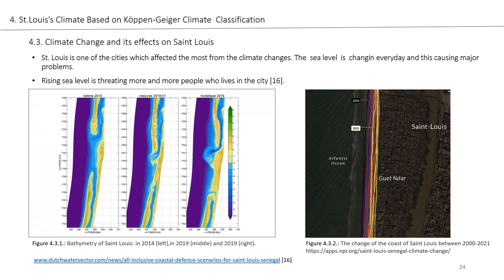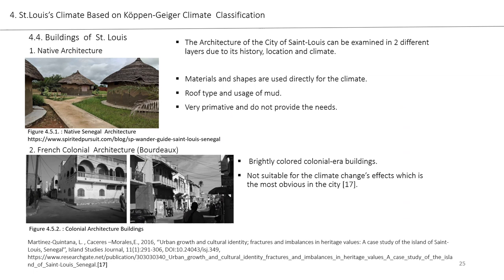The architectural types that affect St. Louis architecture can be examined in different layers due to its history, location, and climate. The first is native architecture, where materials and shapes are used directly for the climate of that time, with characteristic roof types, though it is very primitive and does not provide all necessary needs. The second is French colonial architecture from Bordeaux. All of these brightly colored colonial buildings are not suitable for climate change and its effects in Senegal, and the damage to these buildings makes that obvious.